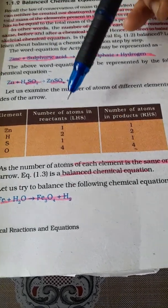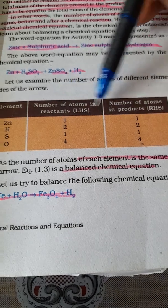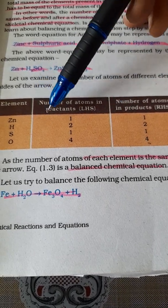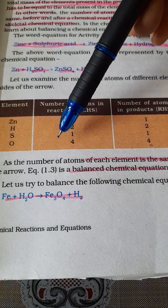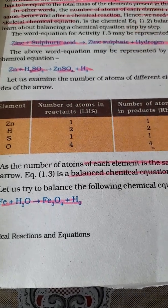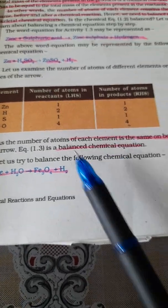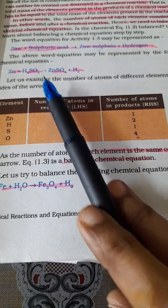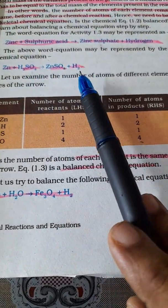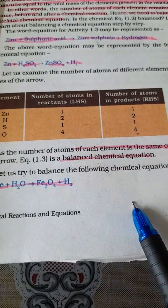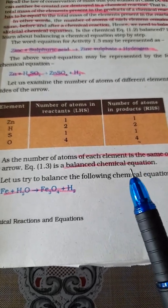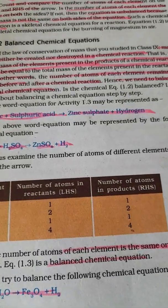You can see that the number of atoms of each element is the same on both sides of the arrow. Zinc is 1 in both cases, left side and right side. Hydrogen is also the same, sulfur is also the same, and oxygen is also the same. If the number of elements on left hand side and right hand side of the equation are same, we call it a balanced equation.